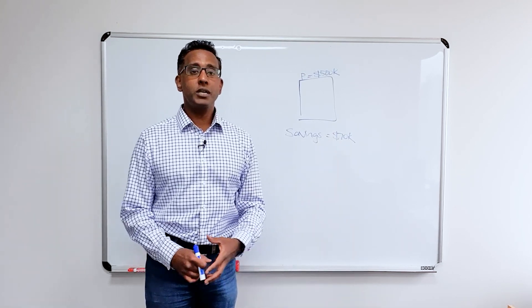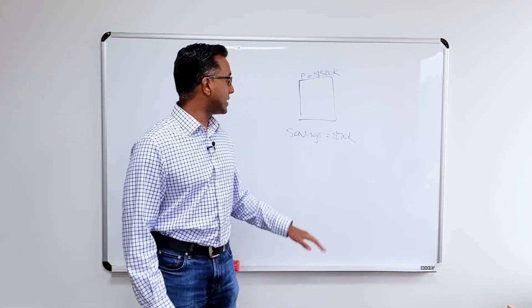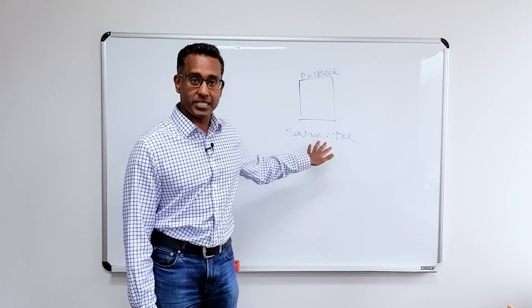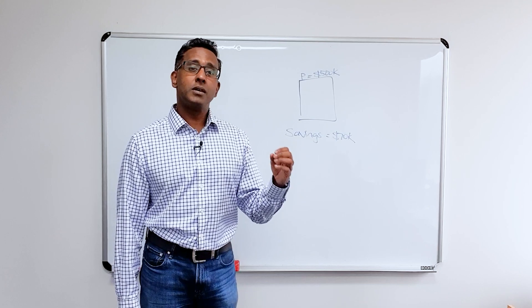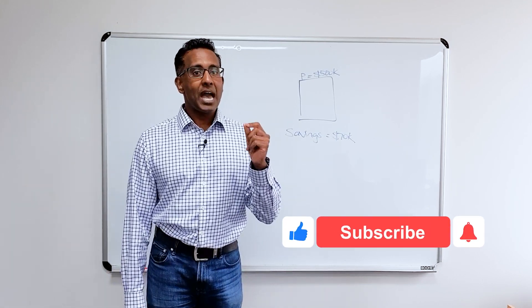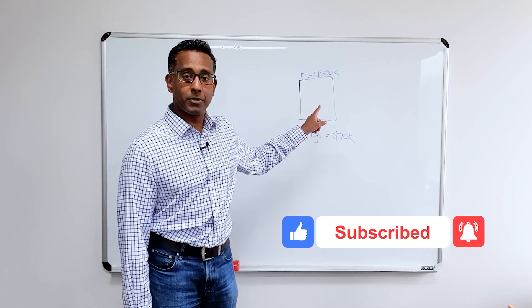Well, option number one is you decide, well, look, I don't want to pay LMI, I am simply going to keep saving and wait till I get to that 100 grand, plus stamp duty, et cetera, before I can afford this property. That's fine. The question you need to ask, though, is, how quickly can I come up with the extra money so that you only need to borrow 80%?